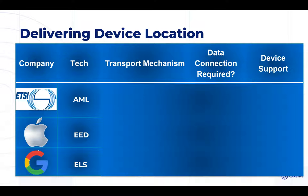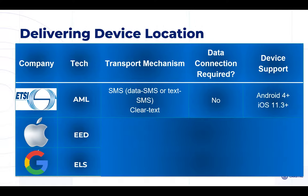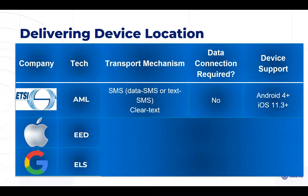Let's look at a comparison of characteristics. With AML from the ETSI organization, it's Enhanced Emergency Data, which uses HELO to calculate the device location on Apple. On Google it's Emergency Location Services, which uses the fused or hybrid location. With AML, the transport mechanism is SMS — and one advantage is it doesn't require a data connection, so if you have a phone without a data plan, this will work in other parts of the world. AML has been supported since Android 4 and iOS 11.